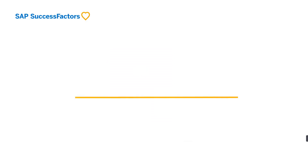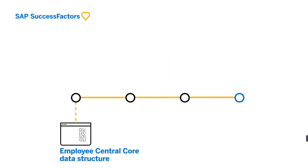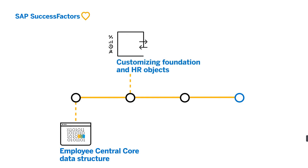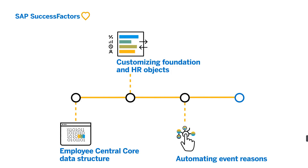In this course, you will learn the data structure that makes up Employee Central Core and how that affects every aspect of the system, how you can customize foundation and HR objects to store company and employee-specific information, and how SAP SuccessFactors Employee Central can automate event reasons that would trigger workflows through business rules in self-service transactions.